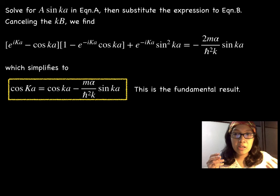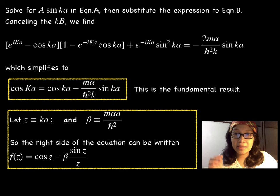For the Kronig-Penney model, the formula is more complicated, but it shares the qualitative features we are about to explore. We simplify the notation by using z and β.